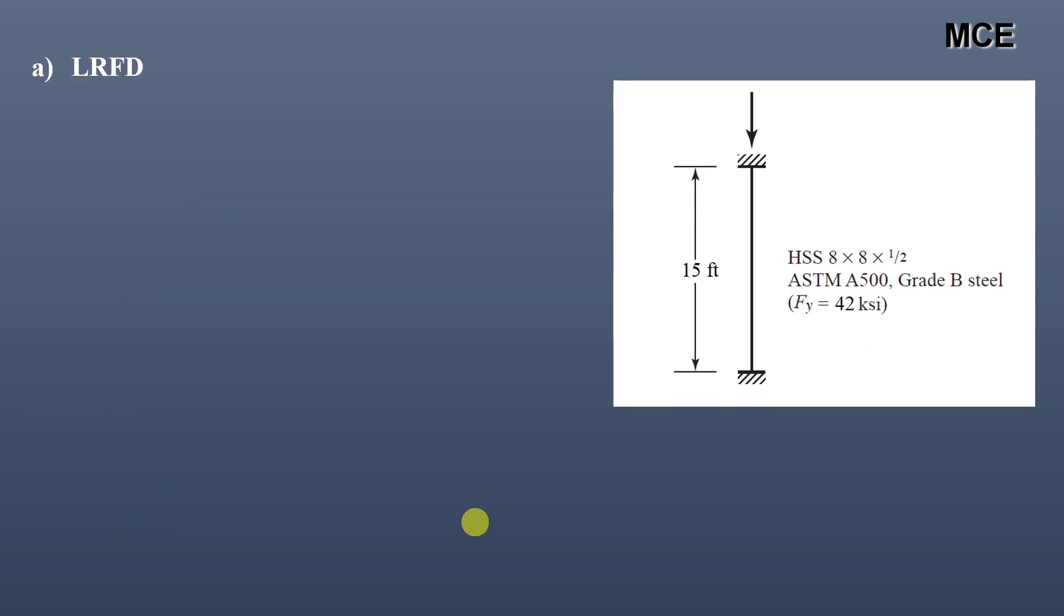For LRFD, the design strength for LRFD is given as resistance factor times the nominal strength, that is 0.9 times 517.73, which is equal to 465.96 kips.